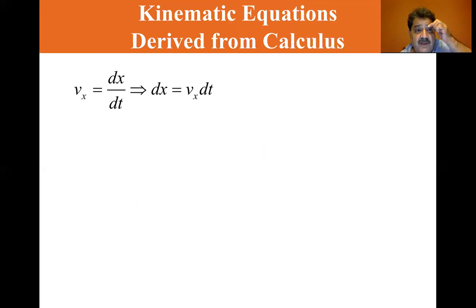Defining the equation for velocity: velocity equals dx/dt, so dx equals Vx dt. You can write in integral form as x_f minus x_i equals the integral from 0 to t of Vx dt.